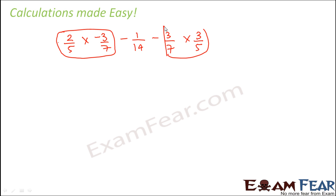So what we will do? We will just try to change the order of these terms. So we will just try to place them in different places. So let's see how do we do that. All we will do is 2 by 5 multiplied by minus 3 by 7 plus we will take this entire term along with the minus sign. So this would be minus 3 by 7 into 3 by 5. So this is one term. So this is another term minus 1 by 14.